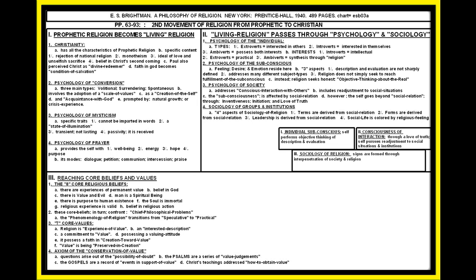So I inserted a little triad here for block two because there's really quite a bit of content there in block two. In one, the individual subconscious self performs objective thinking of description and evaluation of experience. And we move toward the consciousness of interaction through the love of truth. The self pursues readjustment to social situations and social institutions. Then the individual and the social interactive combine to reach sociology of religion, where signs are formed through interpenetration of society and religion both. Fourth, we reach sign formation.